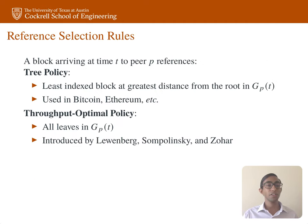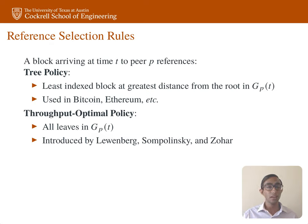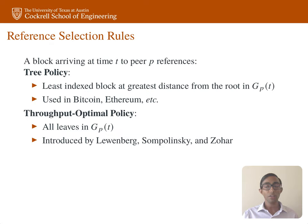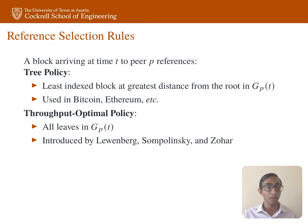For reference selection rules, consider a block arriving at time t to peer p. Under the tree policy, this block references the least-index block at greatest distance from the root in G_p(t) — attaching as far from the root as possible, breaking ties in favor of the oldest block. This policy is used in systems like Bitcoin and Ethereum. More generally, we also consider the throughput-optimal policy, in which the new block references all the leaves in G_p(t).